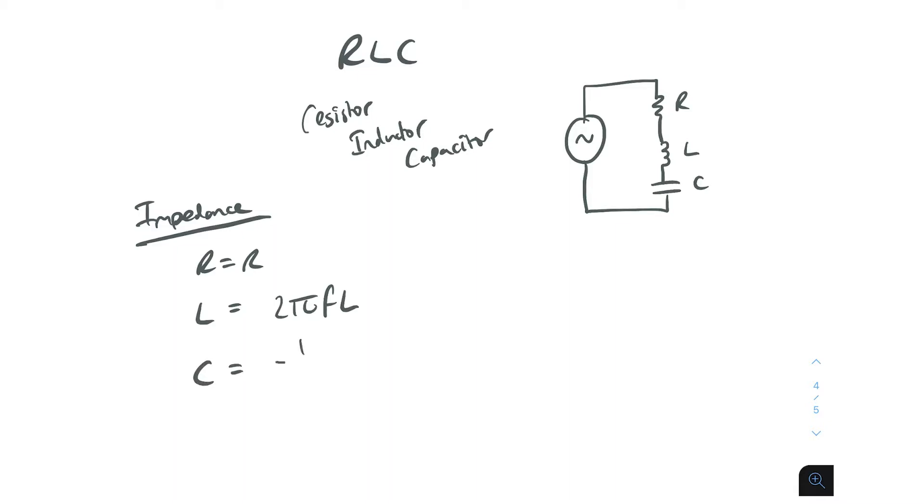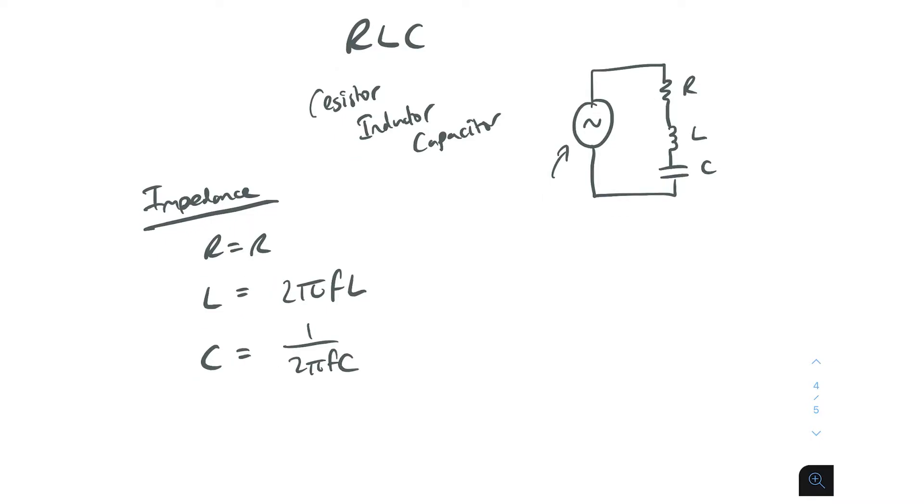The reactance of the capacitor is going to be 1 over 2πfC, where 2π and then f being the frequency of the AC voltage source, L being the value of the inductor in henrys, or C being the value of the capacitance in farads.